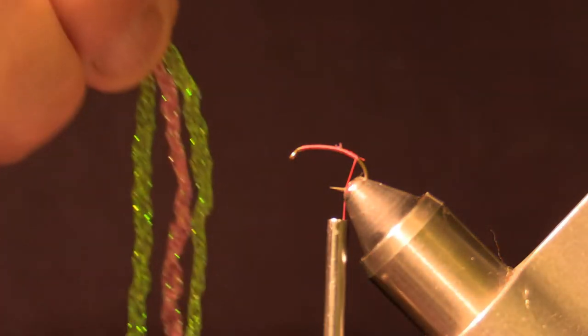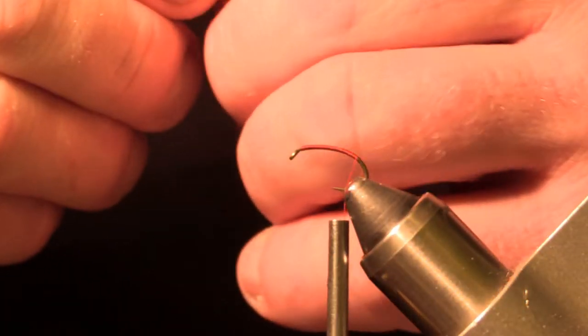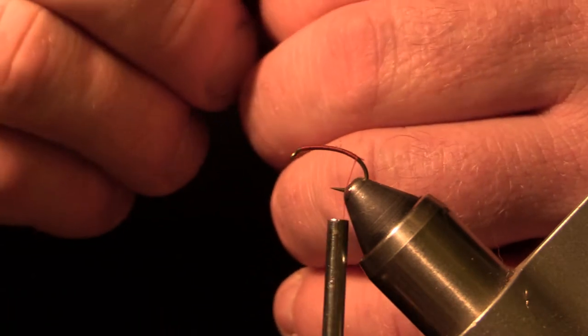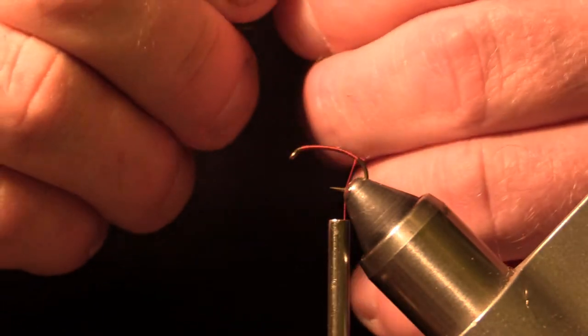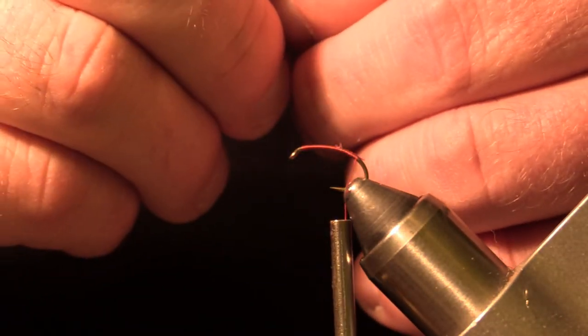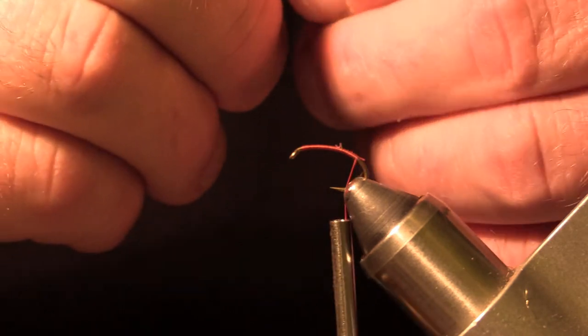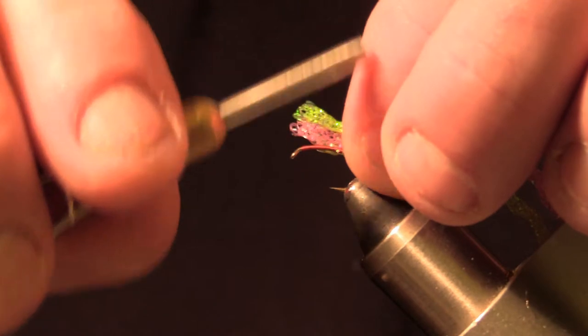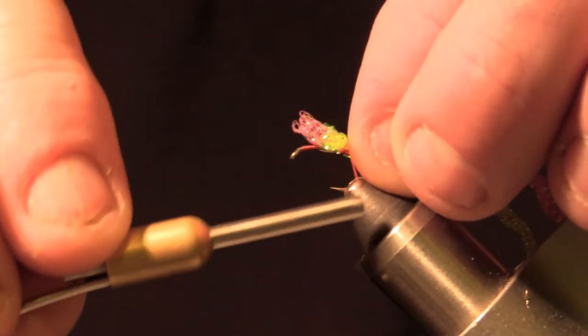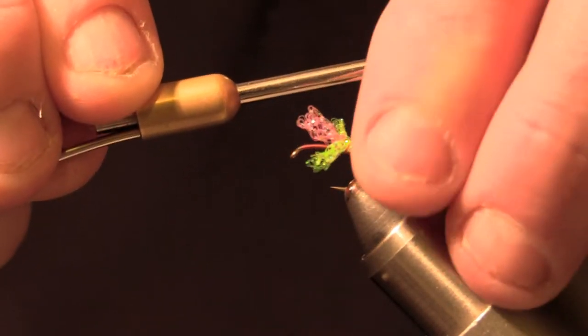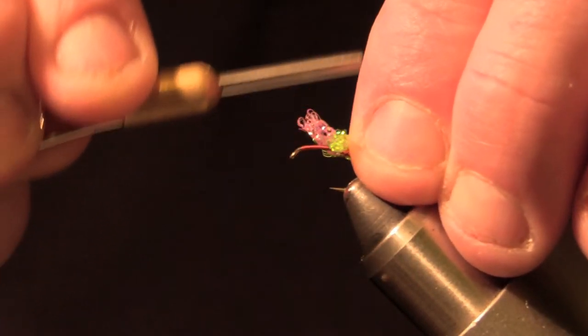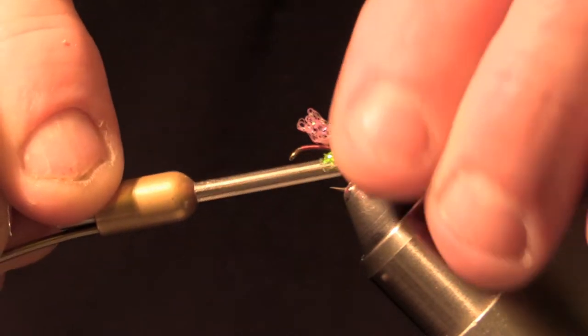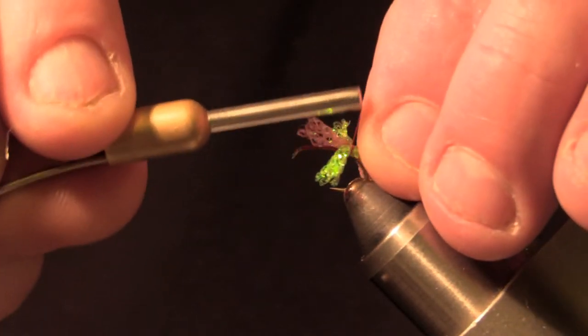We're going to line them up so the three are together how we want them on the hook. Try to get the tips even. You want them right on top of that hook.